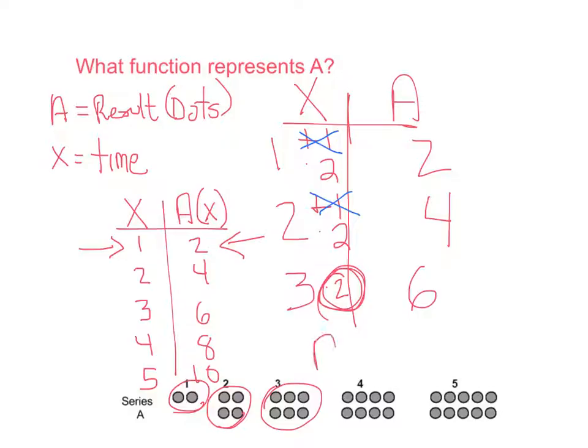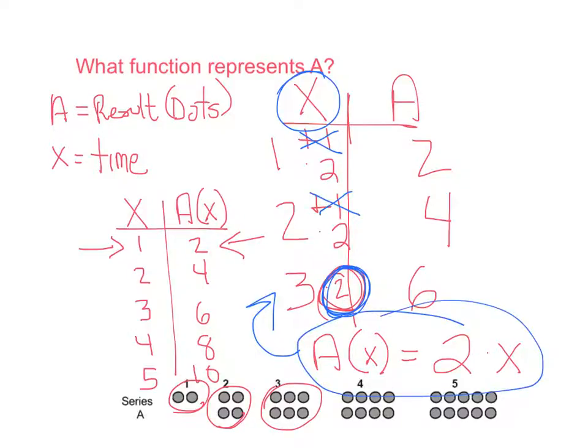So in this case, our function A of X is equal to 2 times X. We can take all this information from the t chart we just built. We have our multiply by 2, and 1, 2, and 3 are simply representations of X. So we put it all together, and we get A of X is equal to 2X.